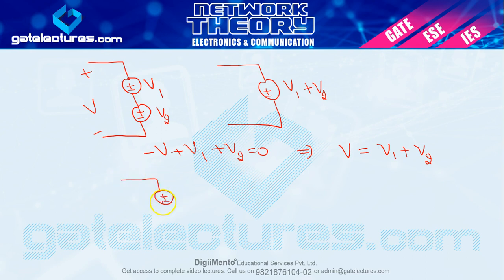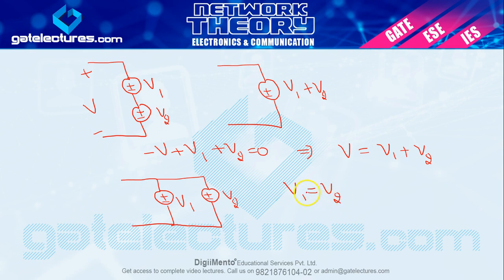Suppose karo agar aapke do voltages parallel mein hain — V1 aur V2. To parallel mein voltage kya hote hain? Same hote hain. To V1 equal to V2 ho jayega. Aur aapko maine parallel pehchanna bataya hua hai: agar kisi bhi element ke dono taraf ek ek point maan lijiye, agar dono ke dono points same hain to parallel mein hoga. Aur hum jaante hain ki parallel mein voltages kya hote hain — same hote hain.